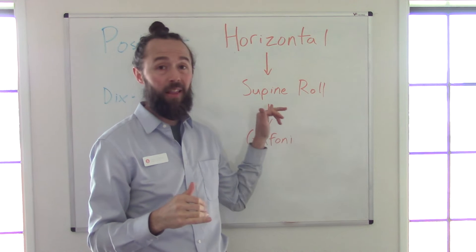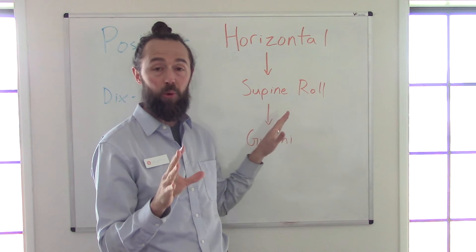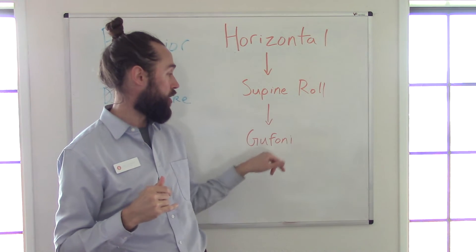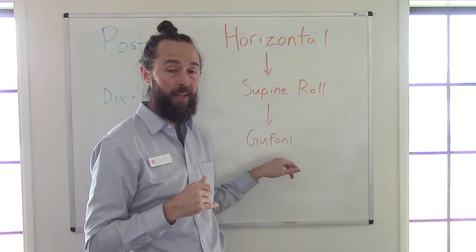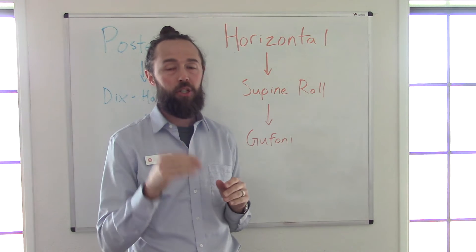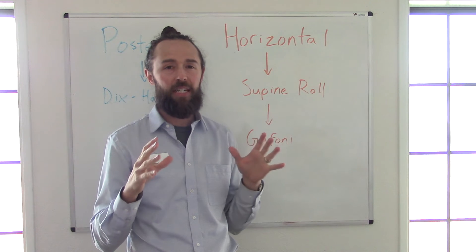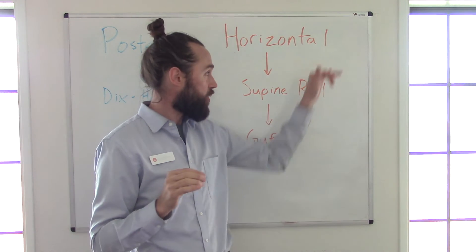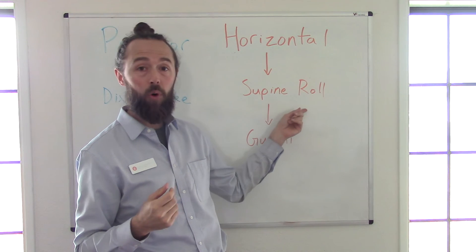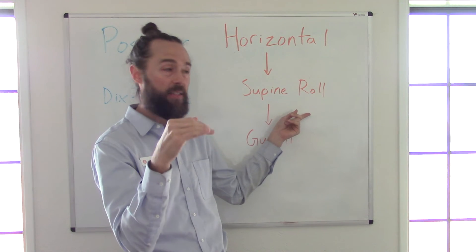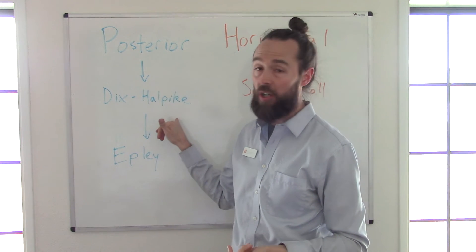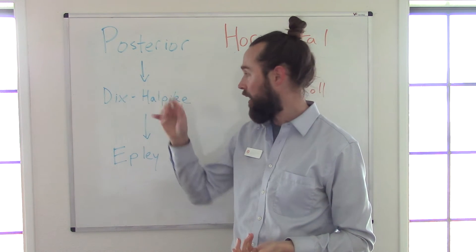It's a little tricky to determine what to do with horizontal canal — it's not quite as straightforward as just doing the Epley. The maneuver you're going to use is the Gufoni maneuver. The direction the eyes are beating is tricky to interpret, so I've got videos on that. To summarize: horizontal canal — supine roll test, looking for side-to-side eye movement, then treat with the Gufoni. Posterior canal — test with Dix-Hallpike, positive test is torsional upbeat nystagmus, treat with the Epley.